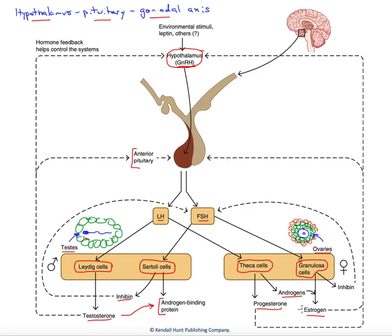Overall, the products, the sex steroids, as well as inhibin, are going to feed back through what's called long-looped feedback. It's going to feed back to the anterior pituitary and to the hypothalamus, helping to regulate this system over time.